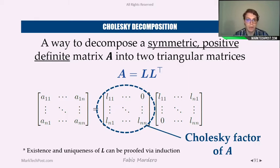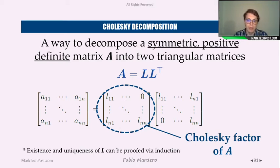The first technique that can be used to decompose and simplify matrices is the Cholesky decomposition. To apply this technique, we need a matrix A that is symmetric and positive definite. If these two conditions hold, then the matrix can be expressed as the multiplication between two triangular matrices: the L triangular matrix times the transpose of L. The L matrix is called the Cholesky factor of A and it is a lower triangular matrix. The Cholesky factor L always exists if the matrix is symmetric and positive definite, and L is unique.